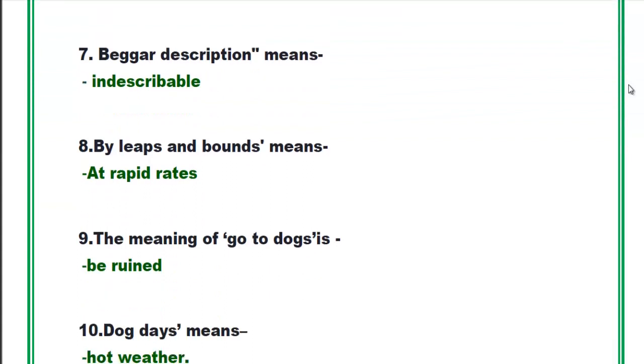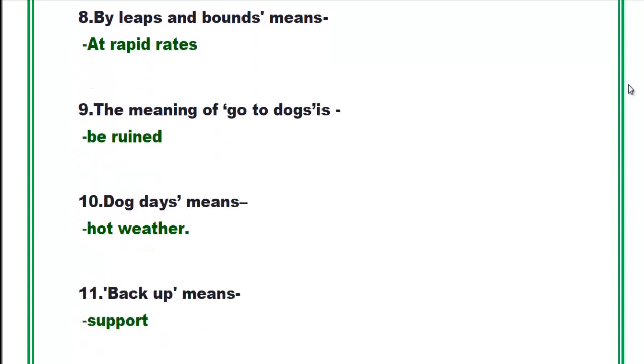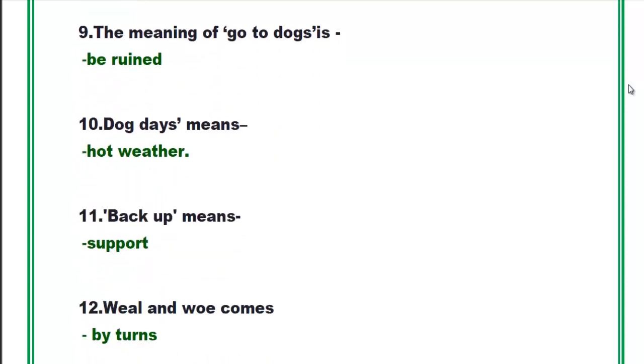Beggar description means indescribable. By leaps and bounds means at rapid rates. The meaning of go to dogs is be ruined. Dog days means hot weather. Backup means support.